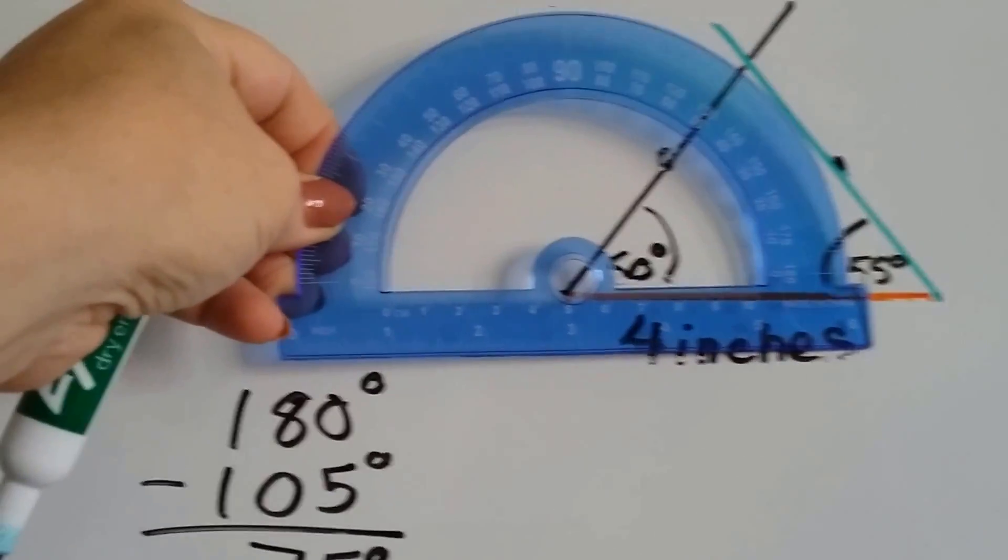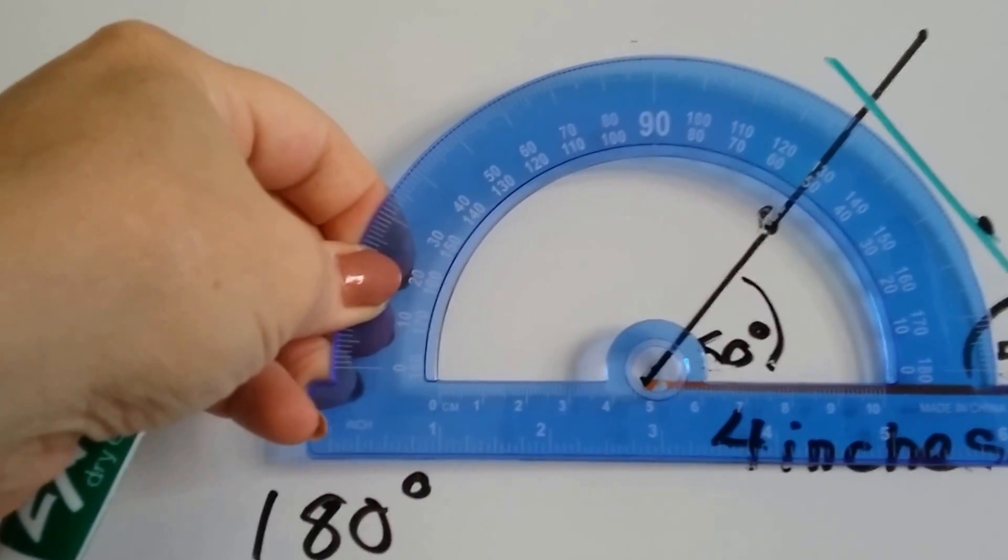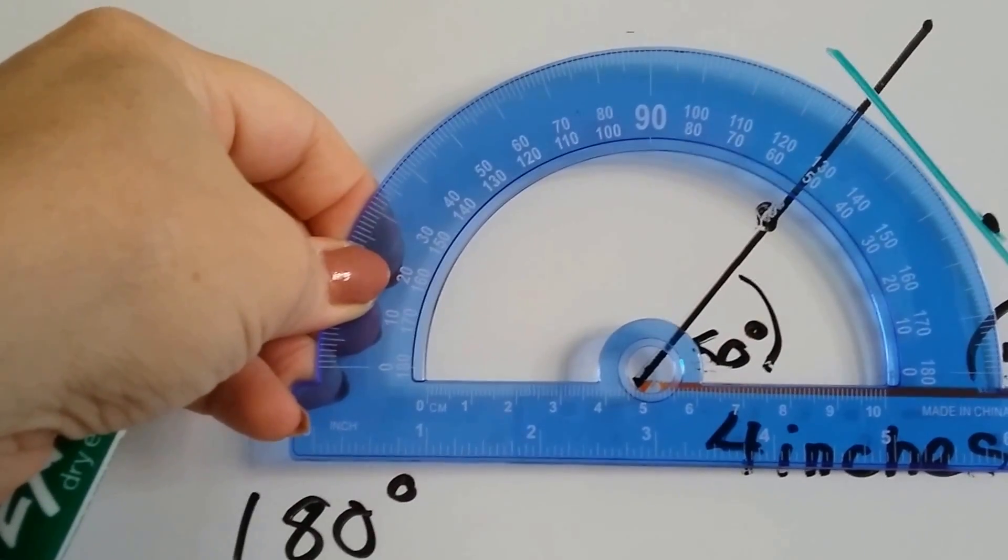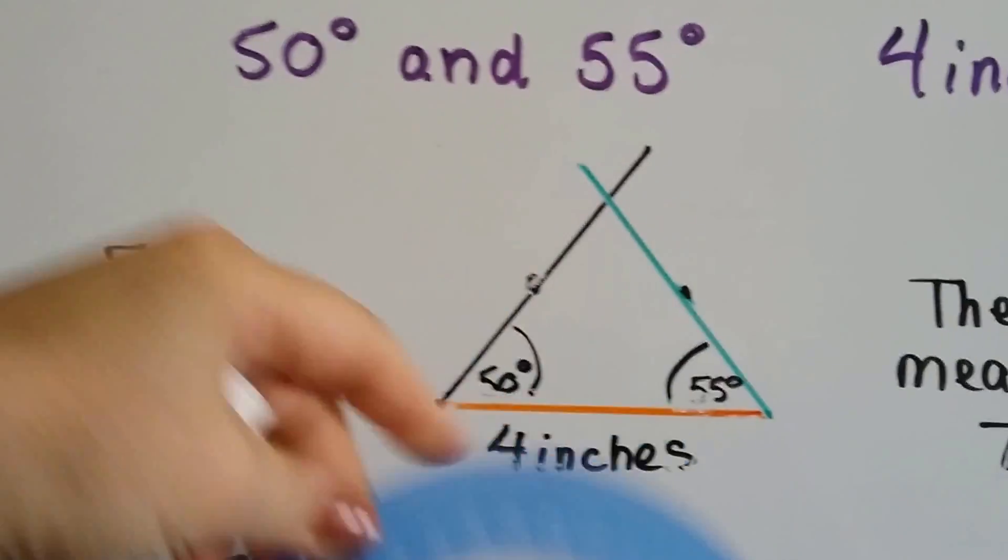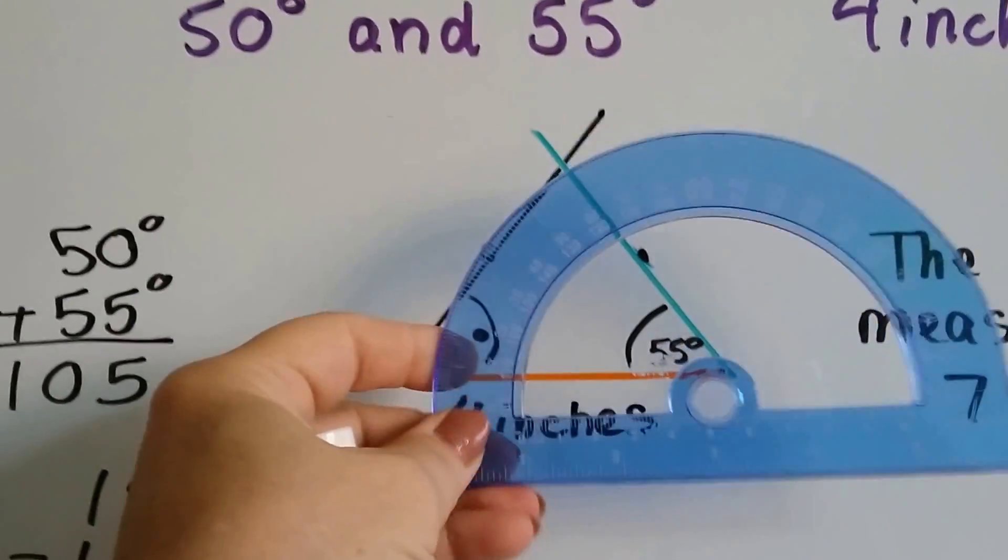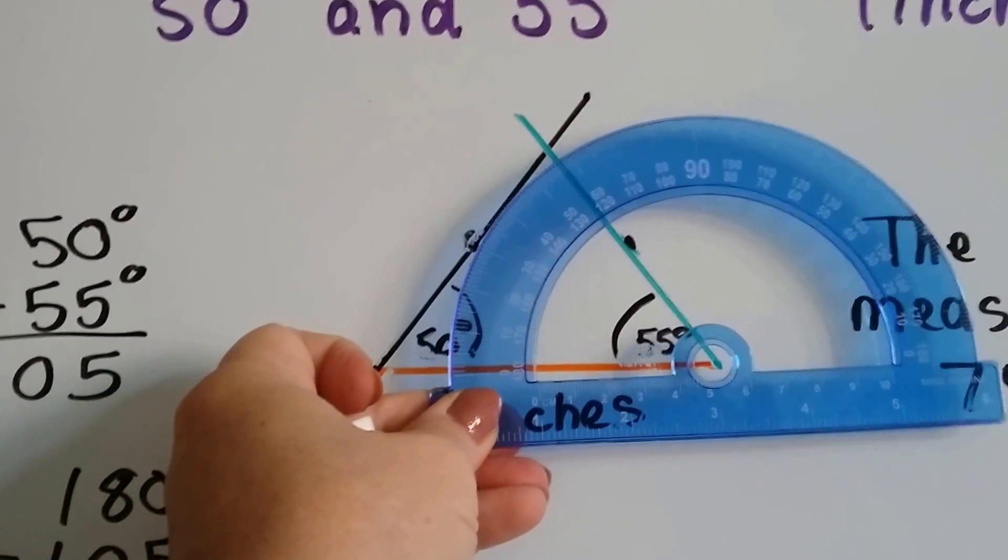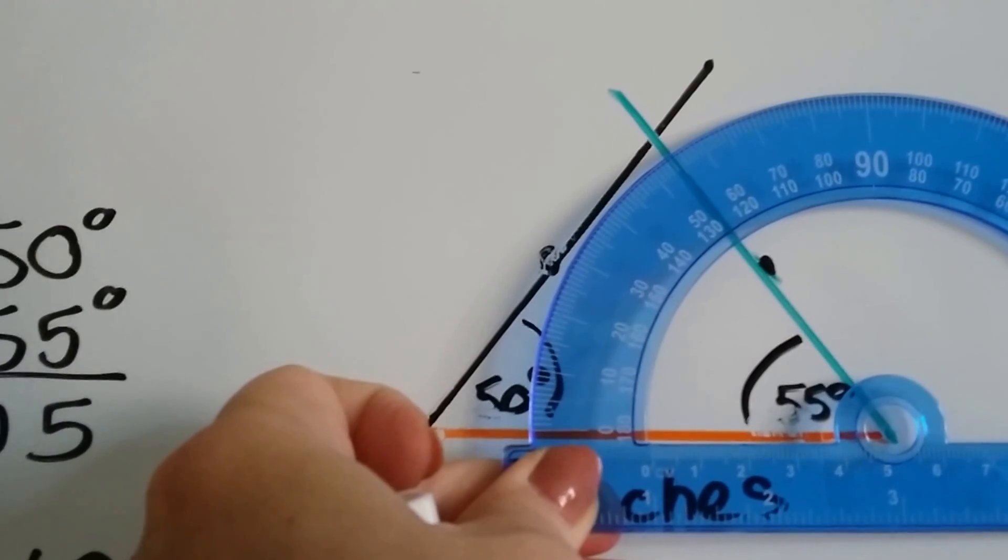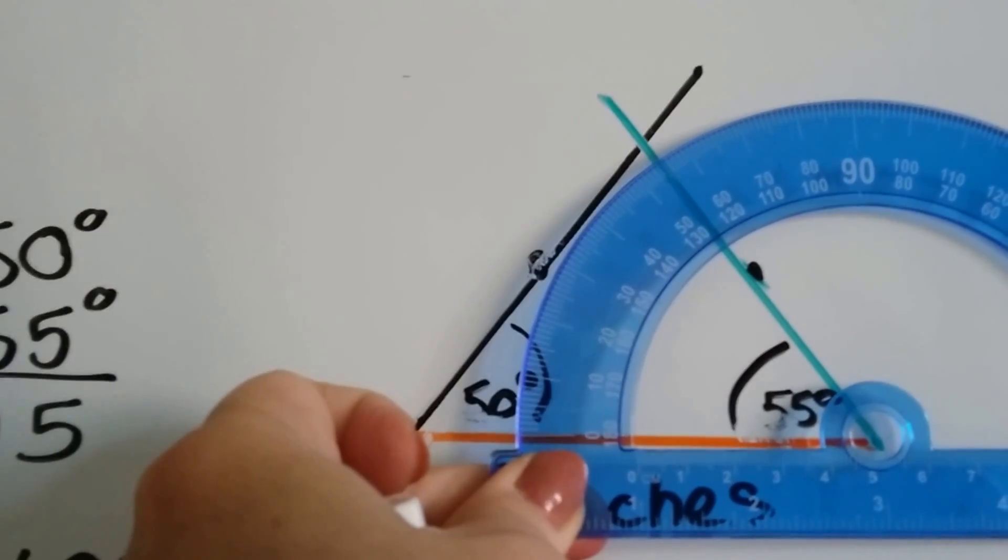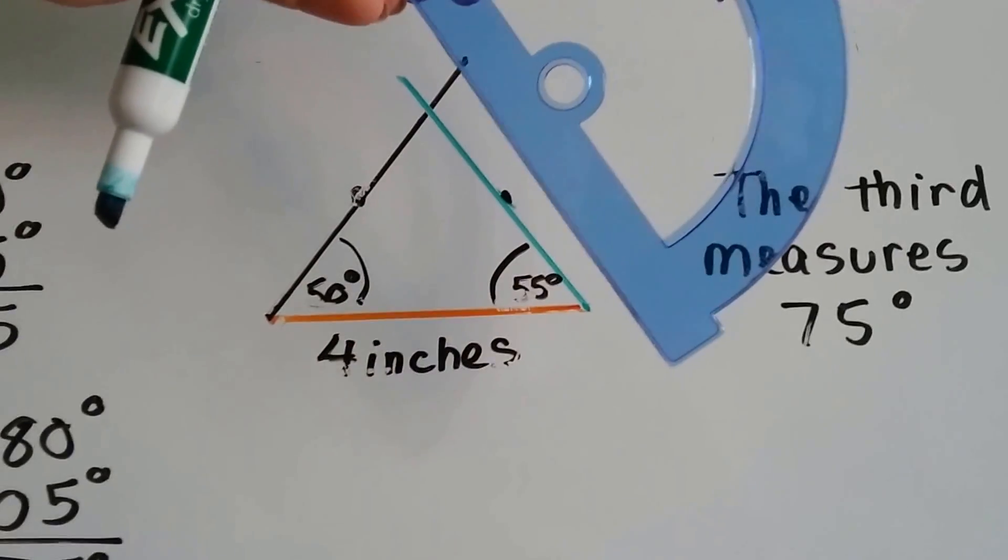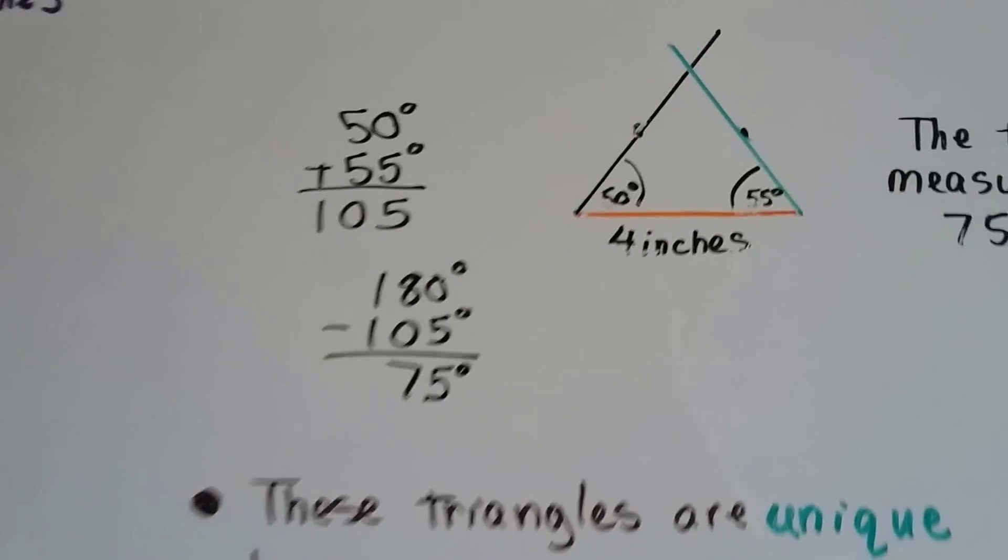Then we make our 50 degree angle the same way we did on the other side. We line this up and we make a mark at the 50 degree angle on the inside part of the measures. We put a mark and draw the line. And then we move to this side of the line and put a mark at 55 degrees. Can you see that's in between 50 and 60 on the outer measures? We put our mark and draw our line. And now we've got another triangle.